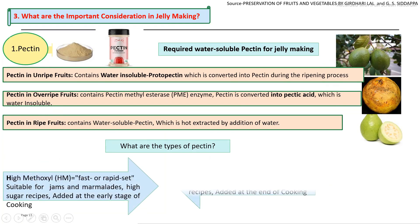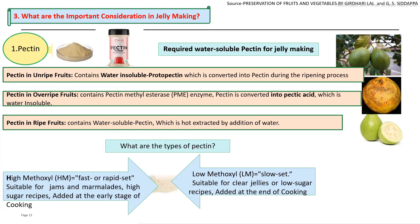For external addition of pectin, a number of grades are available in the market — fast-setting pectin or slow-setting pectin — differing in their methoxyl group content, either high methoxyl or low methoxyl. Fast-setting pectin is suitable for jam and marmalade, while low methoxyl pectin is used for jelly manufacturing.